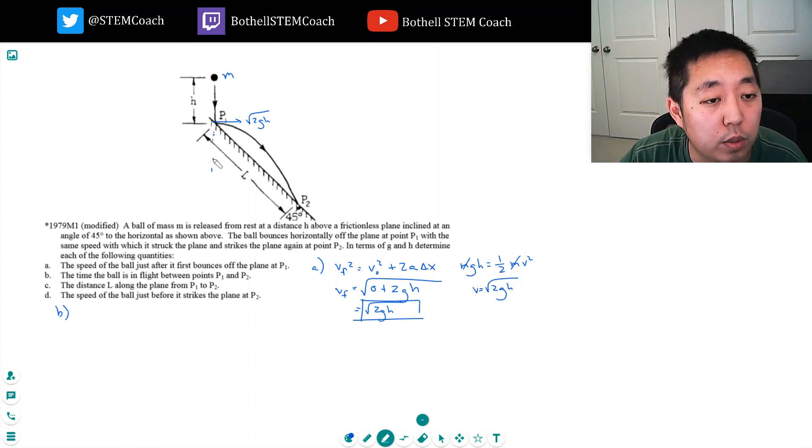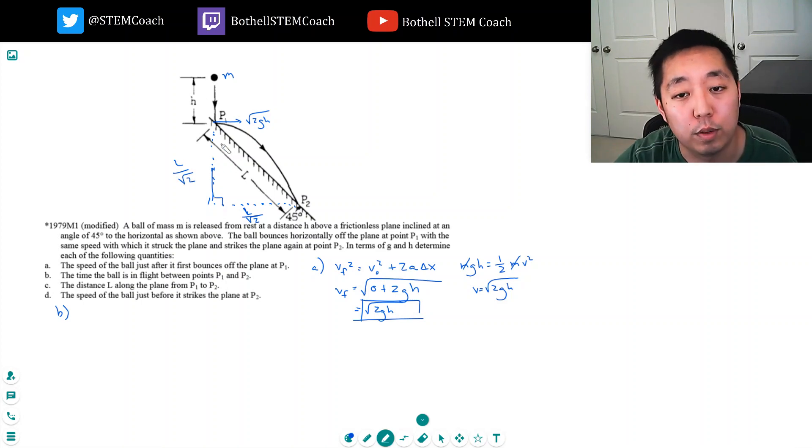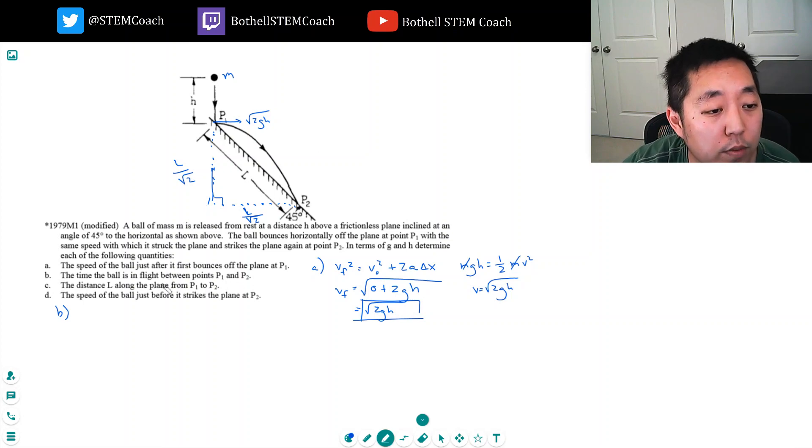So if I know basically the time the ball is in flight, let's see. It has to travel horizontally a distance of, this is l, this is l over the square root of 2, and vertically, because it's 45 degrees, this is l over the square root of 2. This is a 45-45 triangle right here. So vertically it has to drop l over root 2, and horizontally has to go l over root 2.